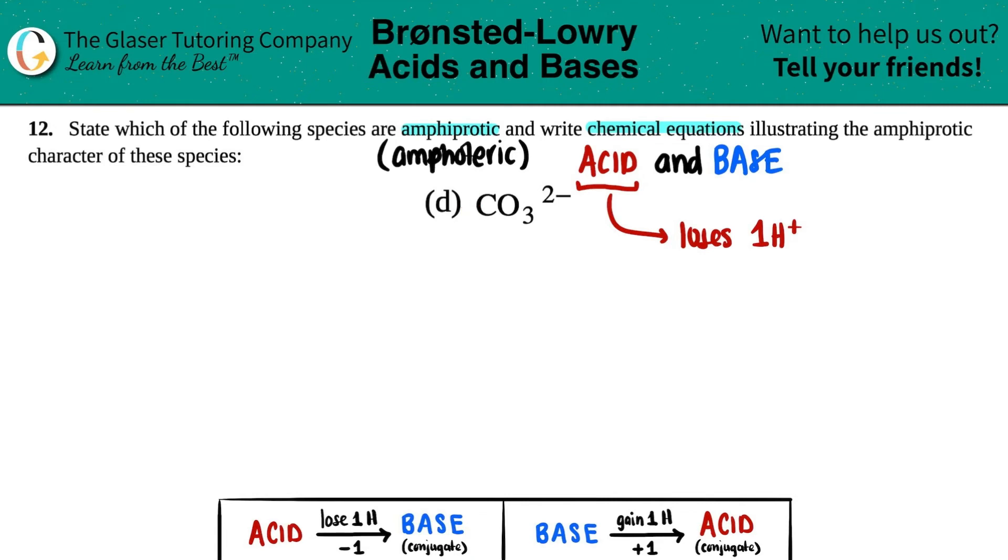So how can I lose something that I don't have? It can't. So can carbonate ever exist as an acid? No, it can't. And because of that, this question ends because if it can't act as an acid, it's not amphiprotic or amphoteric. So carbonate CO3 2- is not amphiprotic.